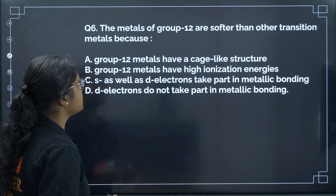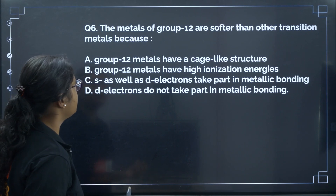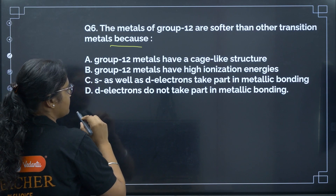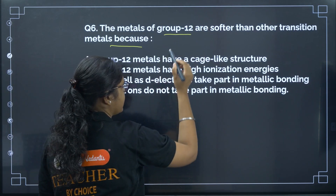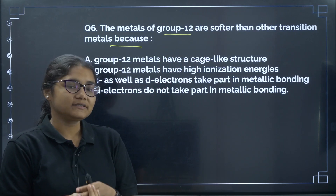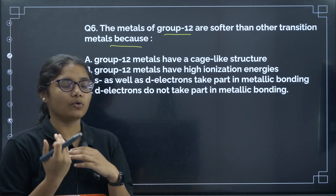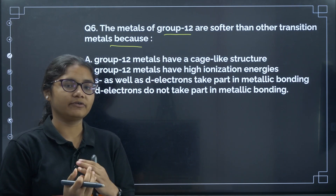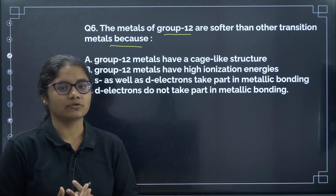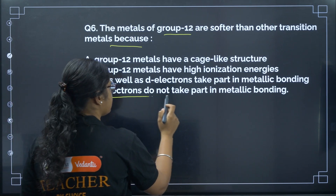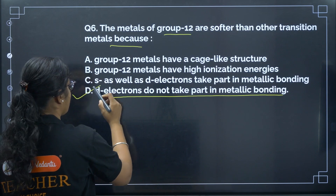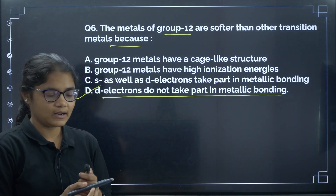Question 6: The metals of group 12 are softer than other transition metals because in group 12 there are no d-electrons available. If d-electrons are not present, there will be no metallic bonding, and as a result intermolecular forces will be less, making the metals softer. D electrons do not take part in metallic bonding. The correct answer is option D.